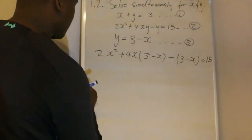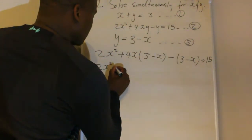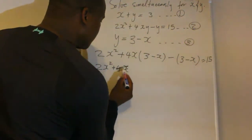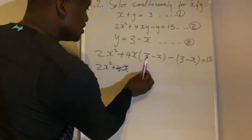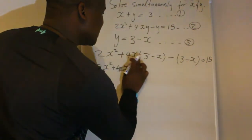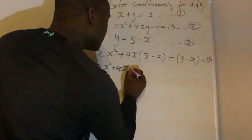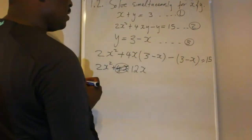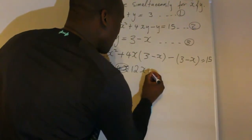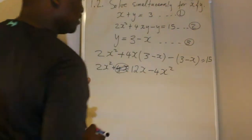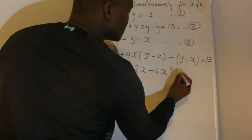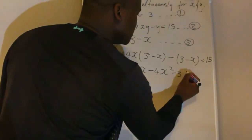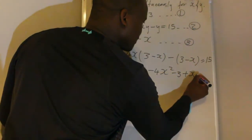The next thing is to simplify by removing all the brackets. So: 2x squared plus 4x times 3 gives 12x; 4x times negative x gives minus 4x squared; negative times 3 gives minus 3; negative times negative x gives plus x; equals 15.